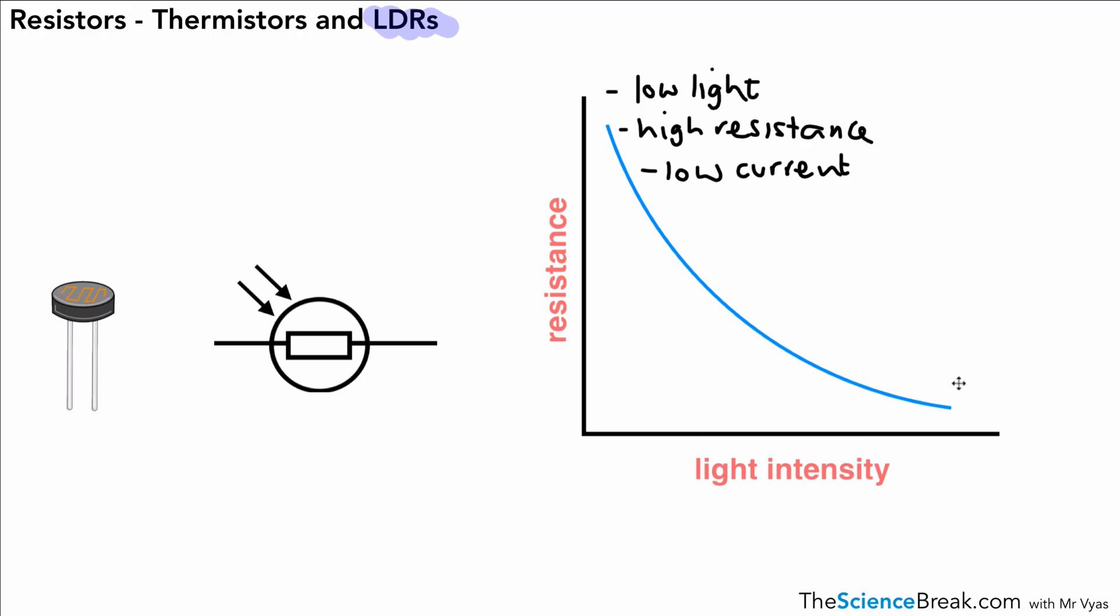So this is how the resistance varies for light intensity for an LDR, and in the previous graph it was how resistance varied for different temperatures for our thermistor.